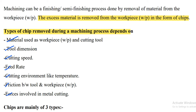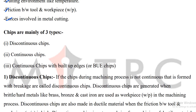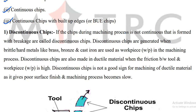Chips are mainly of three types. The first is the discontinuous chip, the second is the continuous chip, and the third is the continuous chip with built-up edge, abbreviated as BUE.